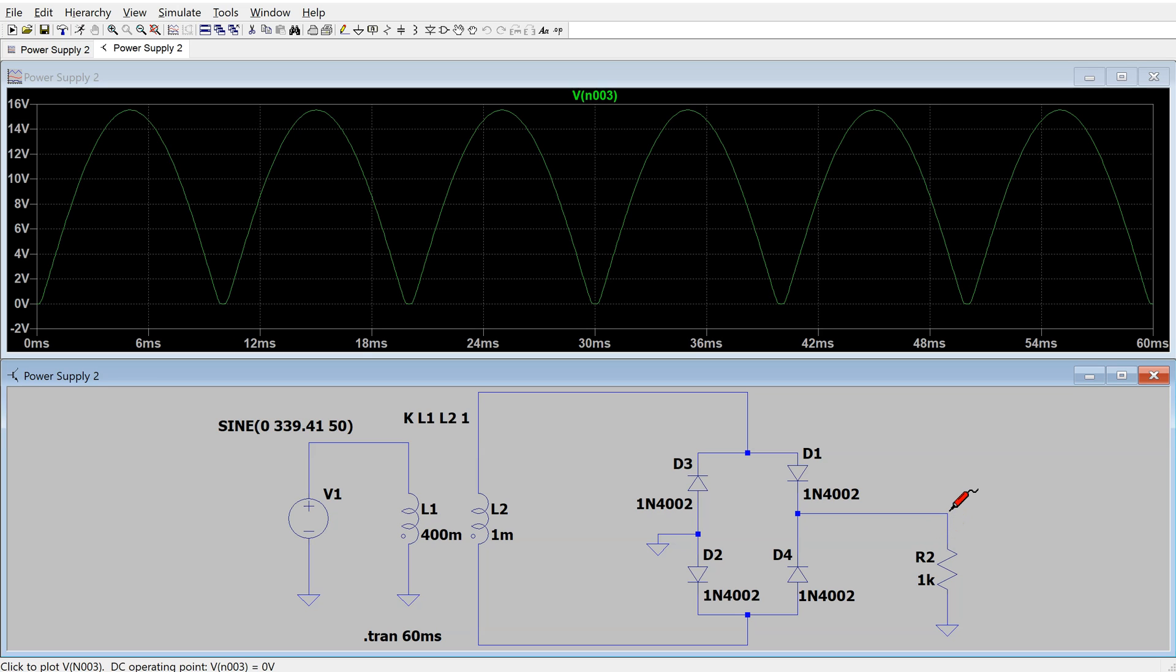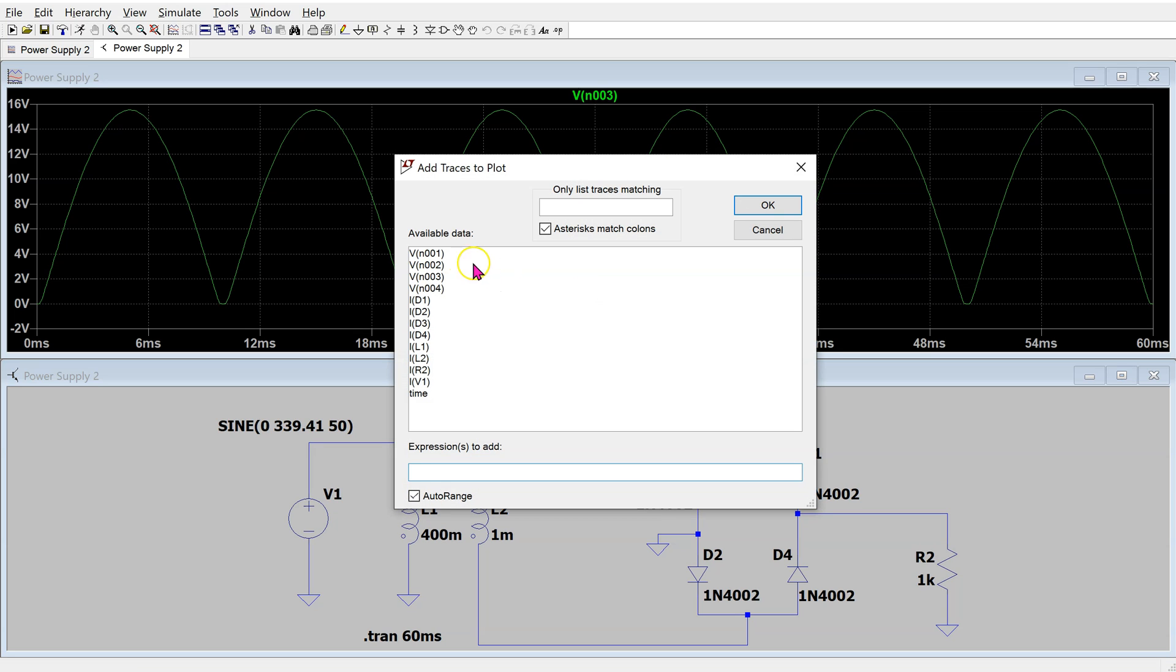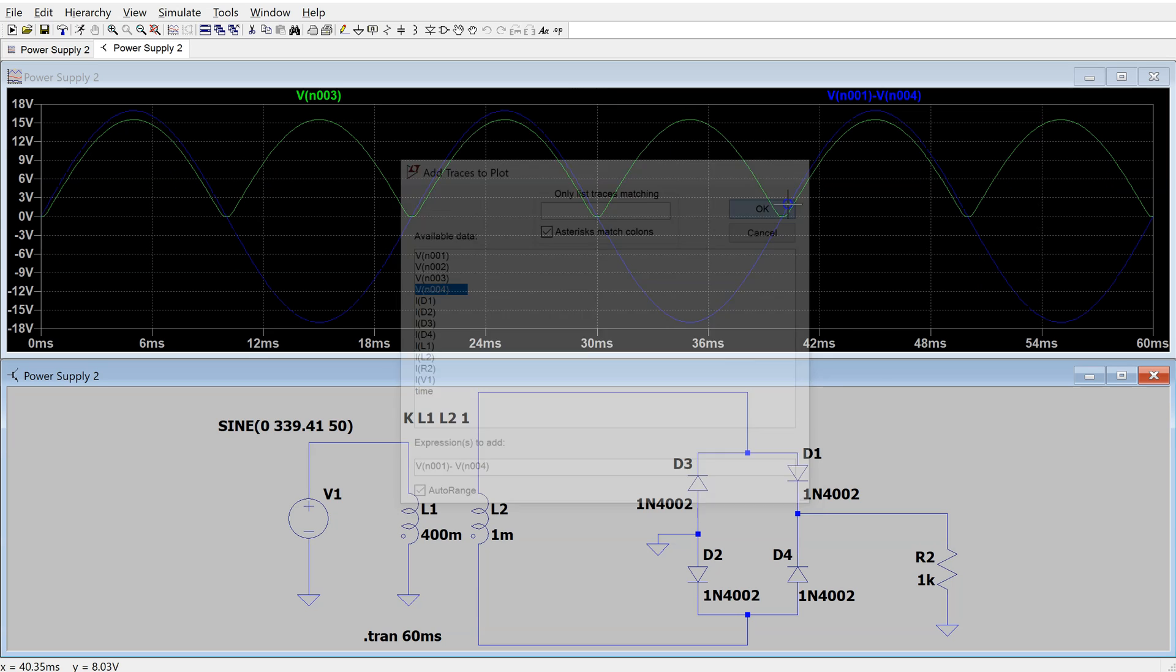We can see that the output voltage is a full wave rectified waveform. The transformer secondary is connected between nodes 1 and node 4. This node information is displayed in the bottom left corner. Thus, we can add trace and display the transformer secondary voltage, which is voltage at node 1 minus voltage at node 4.